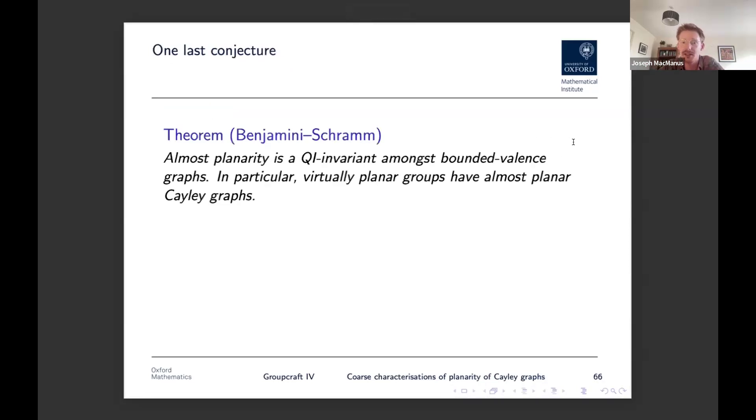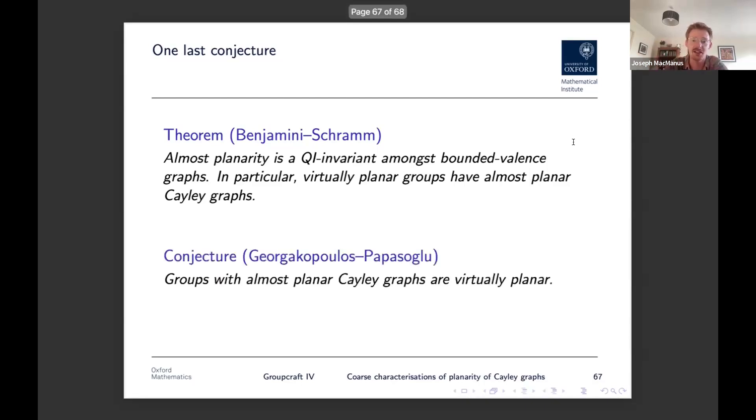But in particular, the fact that it's a QI invariant means that virtually planar groups all have almost planar Cayley graphs, which kind of makes sense. And now the final conjecture that I want to mention is simply that the converse holds. So Georgakopoulos and Papasoglu, the dream team, they conjecture, well, they conjecture that if you find a group in the street and you draw its Cayley graph, but its drawing doesn't look too bad, you know, it's almost planar, then it turns out that that group must be virtually planar, conjecturally at least.